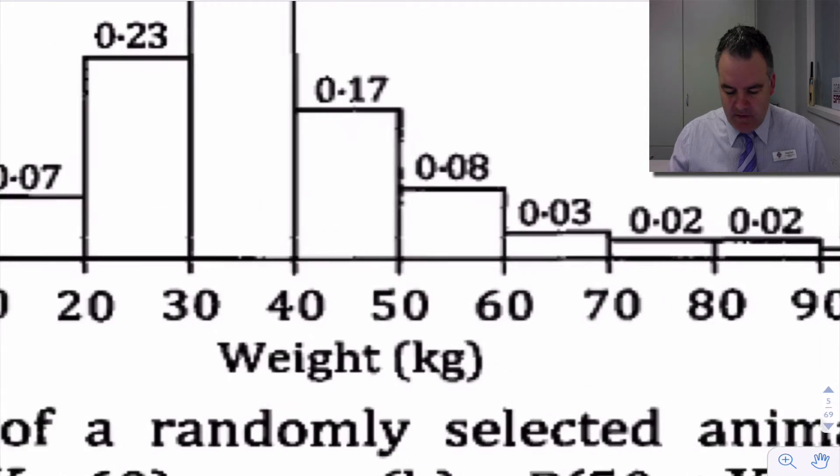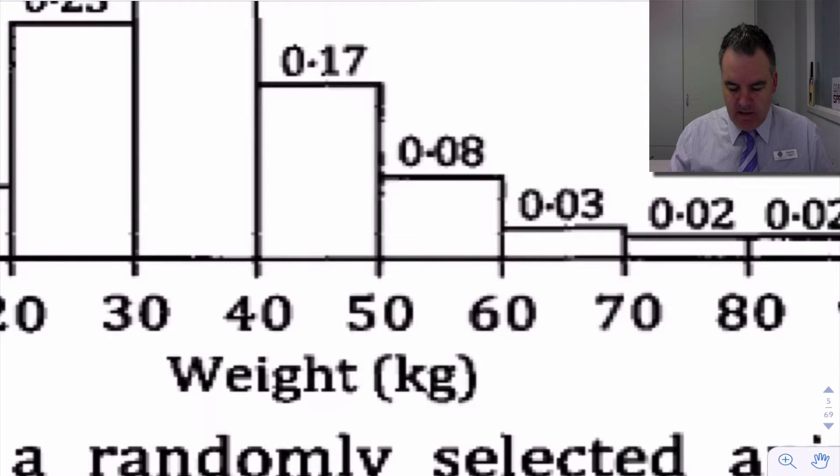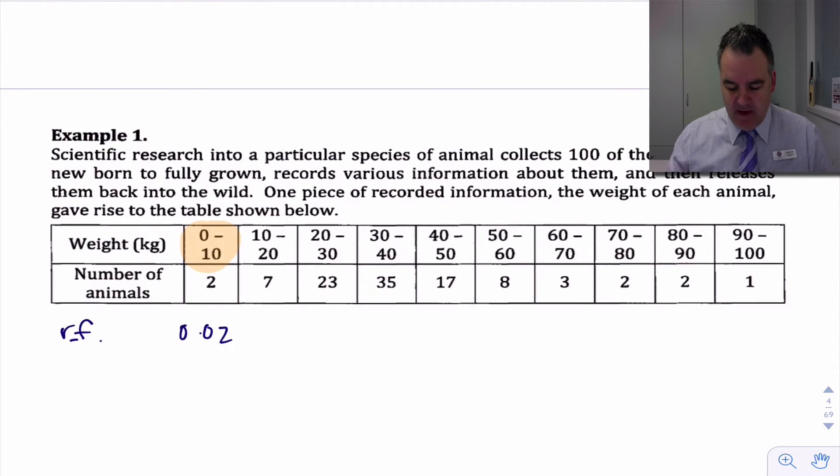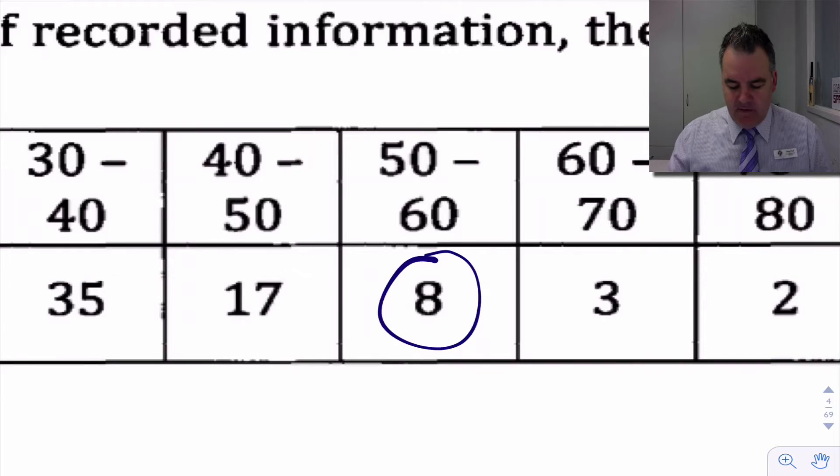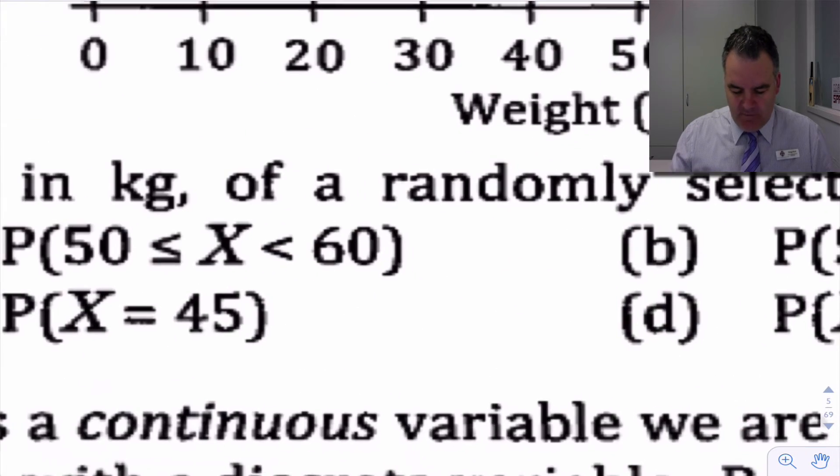So what's the chance that we're between 50 and 60? If I look on here, there's the answer right there, it's 0.08. And again, we could go back and work that out from the table. There's 8 out of a possible 100. So the answer to that first question there is 0.08.